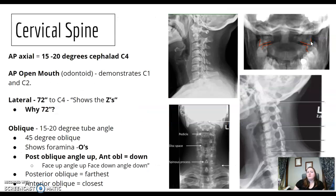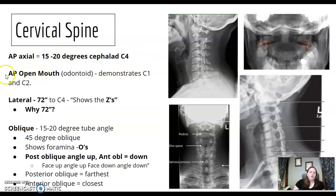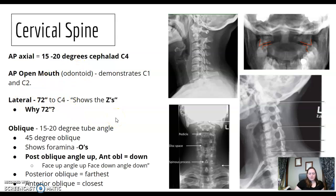C-spine: some things to remember. 15 to 20 degrees cephalad, centering to C4. Know what is demonstrated on the open mouth or odontoid view. For the lateral, why do we do it at 72 inches?